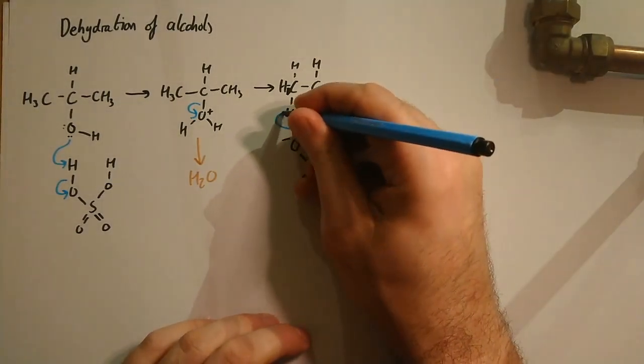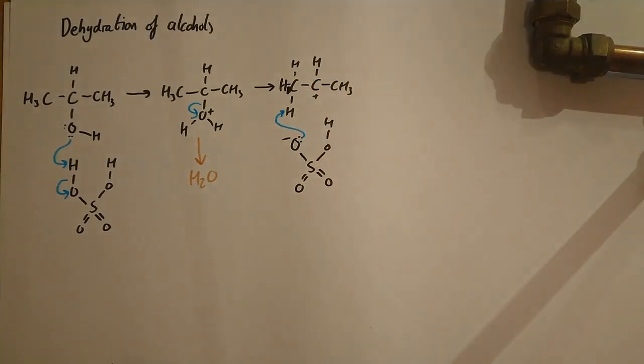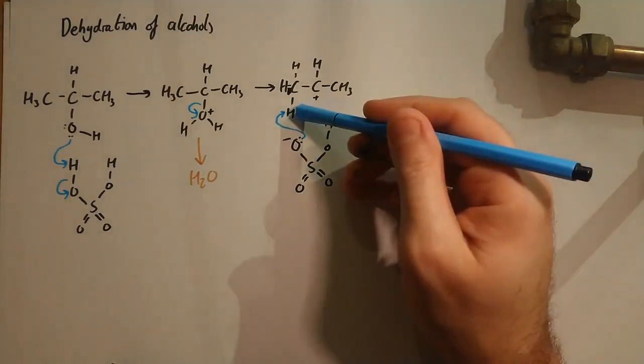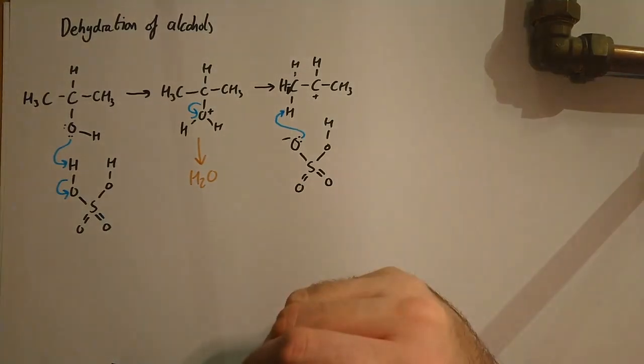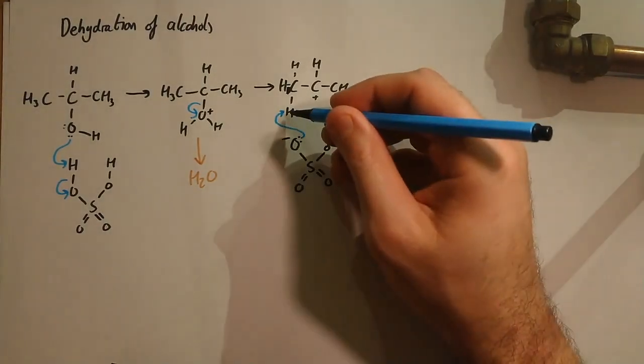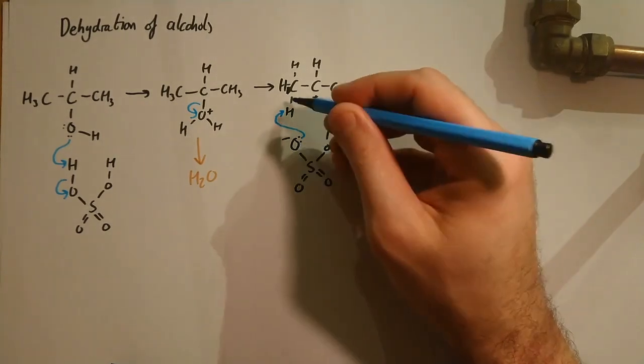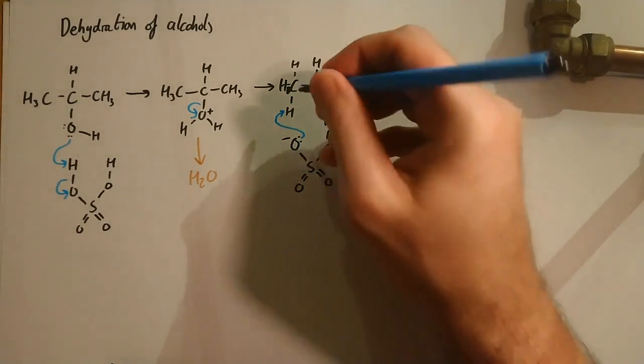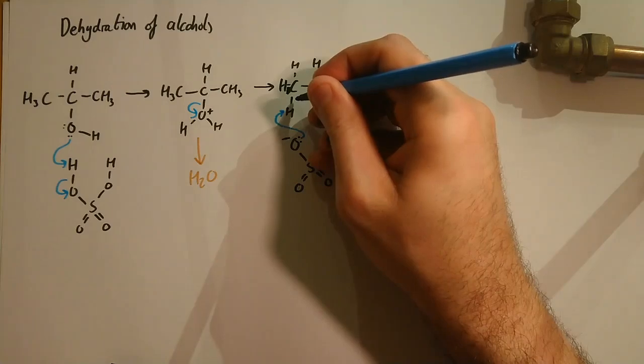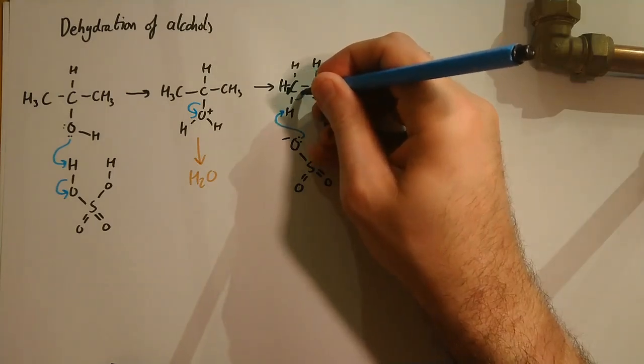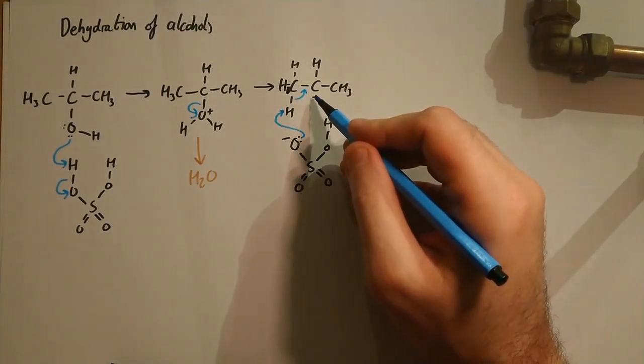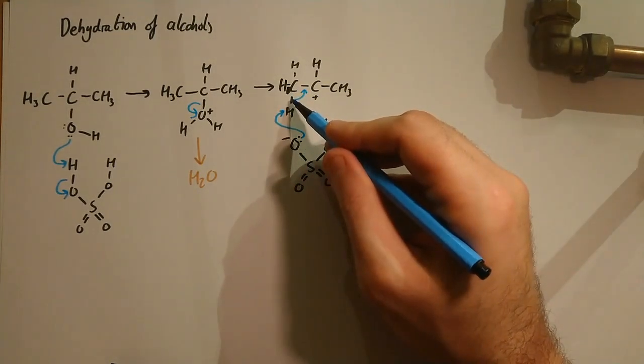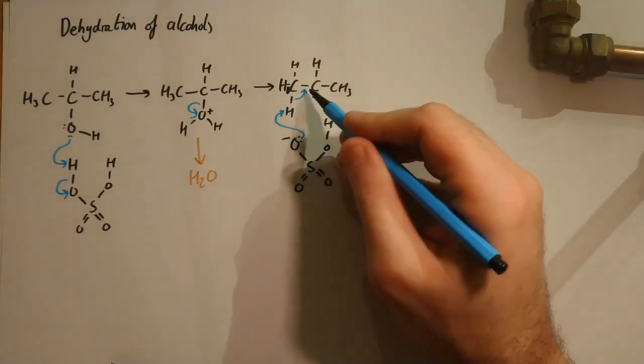So what's it going to do? The lone pair on the oxygen is going to go and attack that hydrogen just there. That hydrogen will now go onto the hydrogen sulfate ion to remake the sulfuric acid we had at the start. But if we lose that hydrogen down to here, we've got a spare pair of electrons that is going to go in here between the two carbons, because that needs some electrons. Hence why it's got a positive charge. So it's going to get the electrons that were in this carbon-hydrogen bond, and it's going to go between those hydrogens just there.